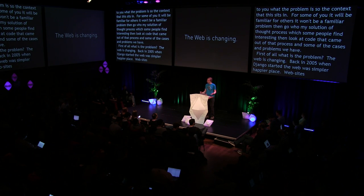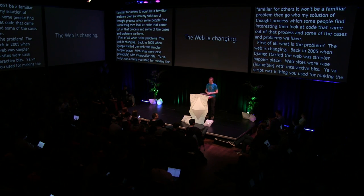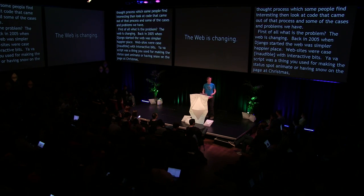What is the problem? Well, the web is changing. Back in 2005 when Django was started, the web was a simpler, happier place. Websites were static HTML with a couple of interactive bits. JavaScript was used for things like making the status bar animate or having snow on the page at Christmas. But since then, things have changed — we have rich web applications, data binding, and WebSockets. WebSockets was really the thing that drove me to this in the first place.